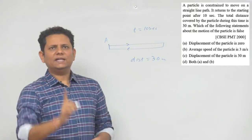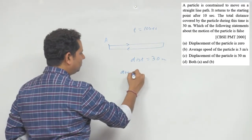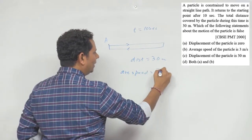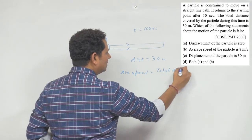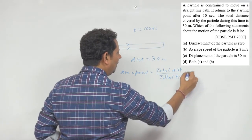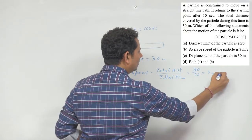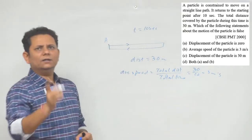Average speed of the particle is 3. To agar average speed ki baat karenge, wo hai total distance divided by total time. Total distance dekhenge to 30 hai aapka, or time taken 10 hai. To 3 meter per second, yeh aapki value sahi ho gayi.